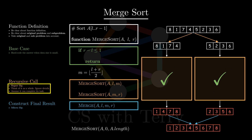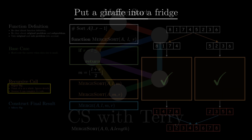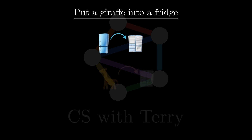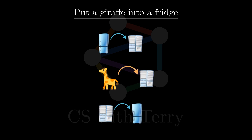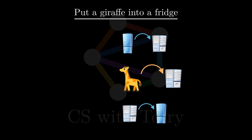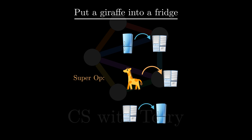Now, let's answer the question: how do you put a giraffe into a fridge? Well, there are three steps. Step 1: open the fridge door. Step 2: put the giraffe in. Step 3: close the fridge door. Here, putting the giraffe in the fridge is a super operation, while opening and closing the fridge door are micro operations. Instead of worrying about the details of the super operation — putting the giraffe in — let's just be steadfast in our belief that it can be done.